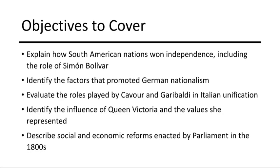Moving on to a snapshot of Britain, we'll be talking about Queen Victoria's reign from 1837 to 1901, which left a great mark on the British Empire. Her influence extended beyond politics — it encapsulated a set of values collectively known as Victorian morality. Victoria's reign coincided with the zenith of the British Empire, and her values became emblematic of the social and cultural ethos of the time.